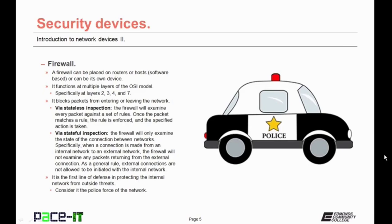First up is the firewall. A firewall can be placed on routers or hosts — it can be software-based — or it can be its own device. A firewall functions at multiple layers of the OSI model, specifically at Layers 2, 3, 4, and 7. A firewall can block packets from entering or leaving the network through one of two methods. It can do it through stateless inspection, in which the firewall will examine every packet that enters or leaves the network against a set of rules. Once the packet matches a rule, the rule is enforced and the specified action is taken.